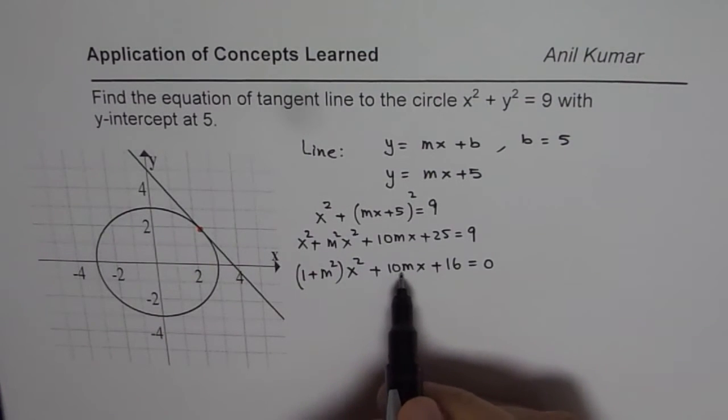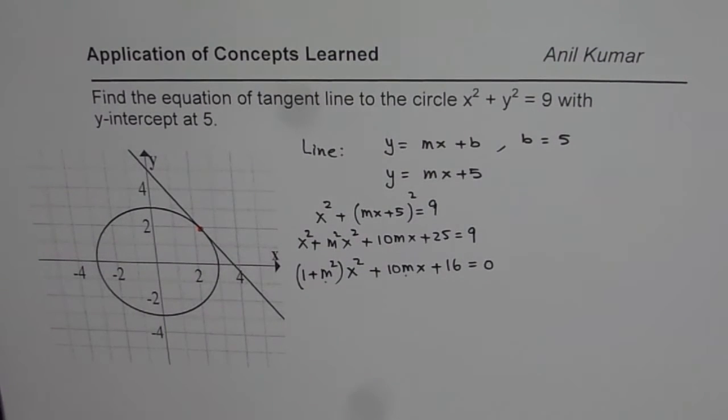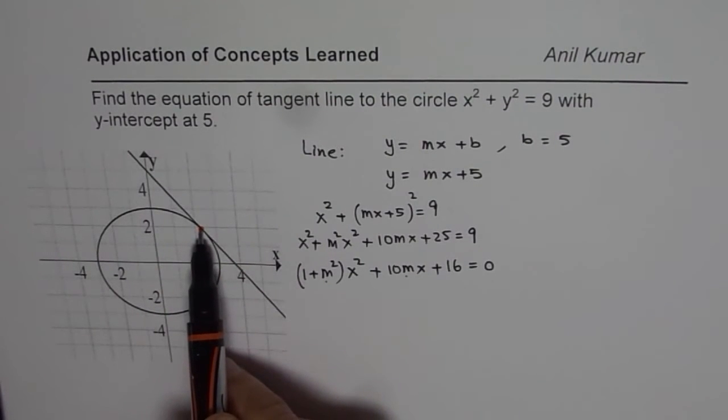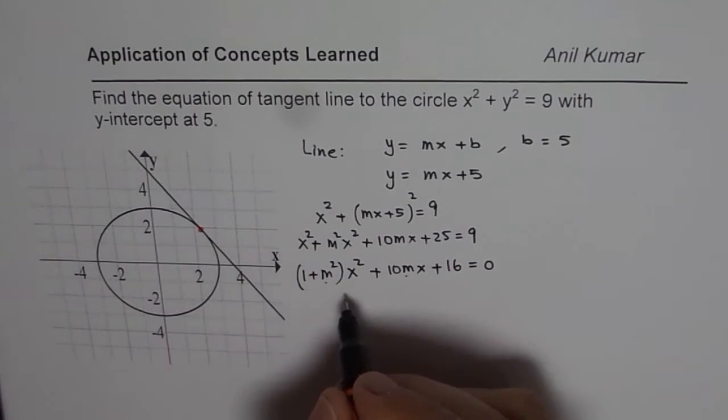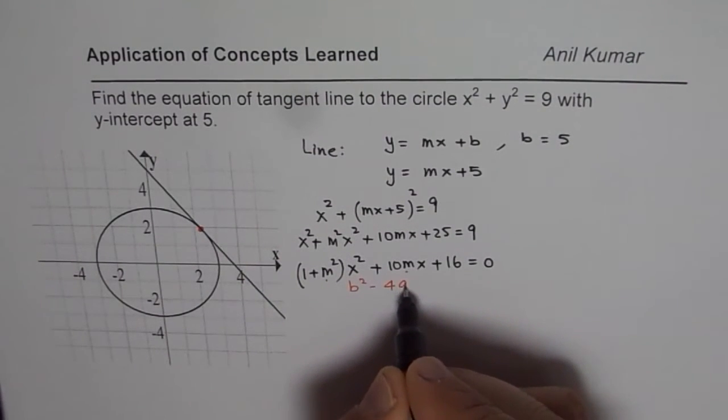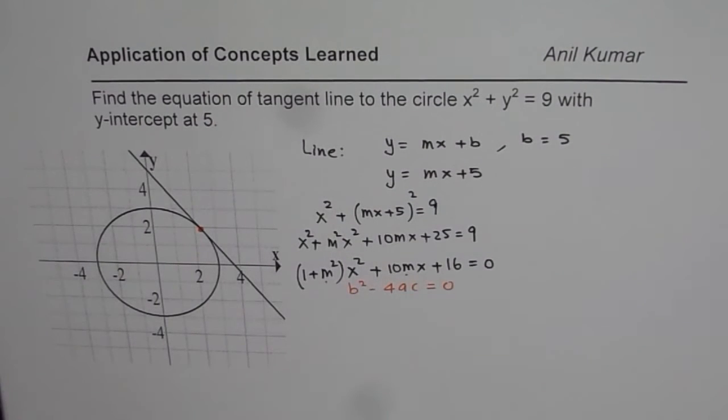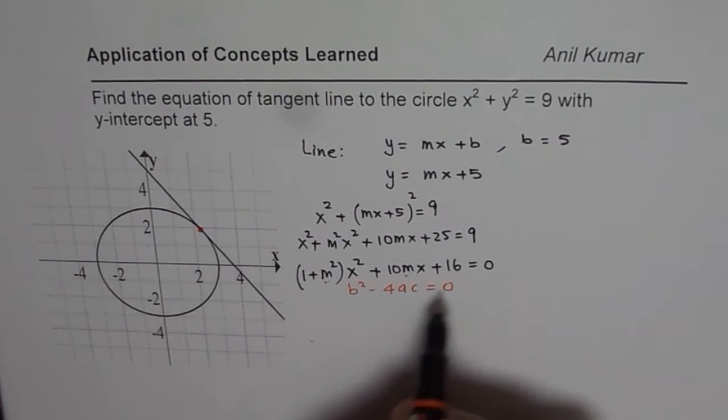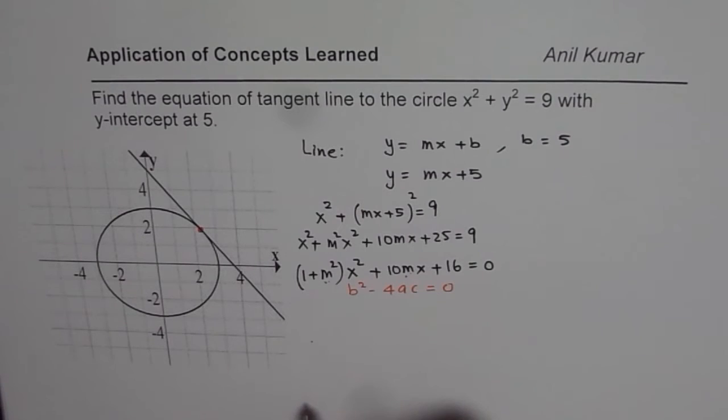Now, from this equation, you have to find m. That is your question, which in itself is a big question. How do you find m from this equation? Now, we know one more condition and that is that this quadratic equation should have only one solution since it is tangent. There is only one solution. That means, b square minus 4ac, as you learned, could be equals to 0. That helps to solve this equation. Where b is 10m, a is 1 plus m square and c is 16 for us. So, we can use this to solve the particular equation.